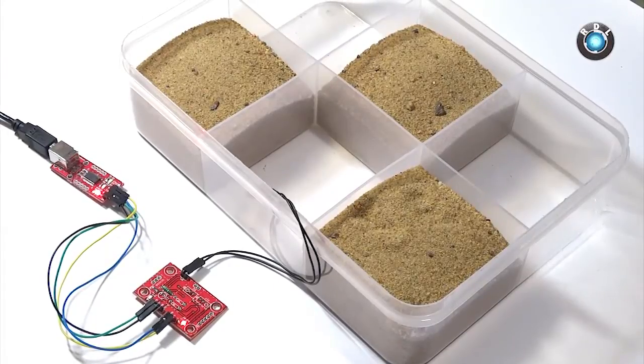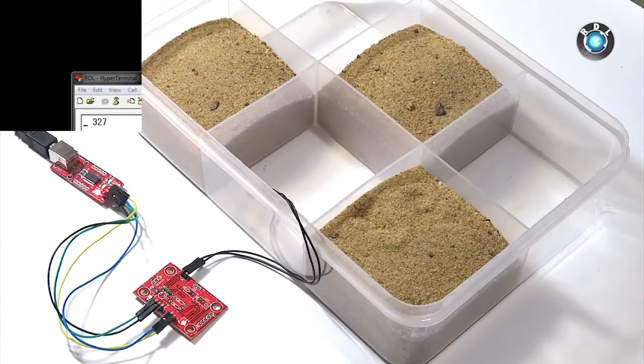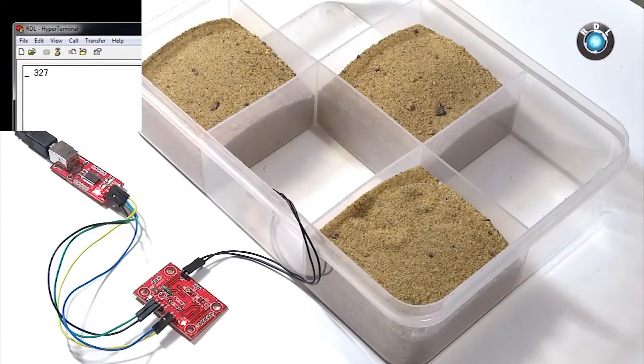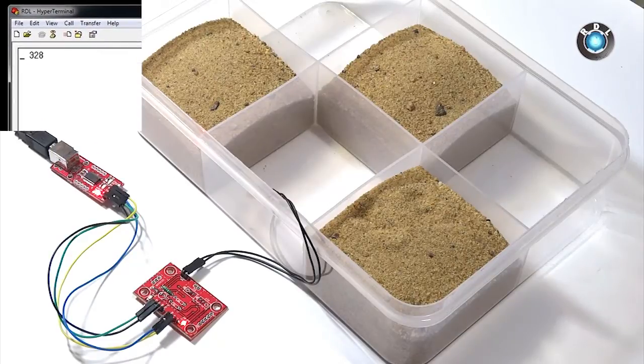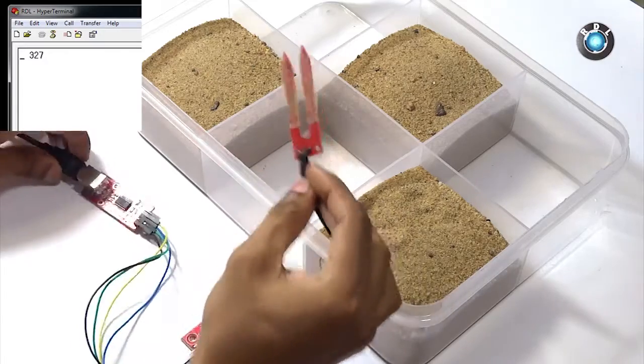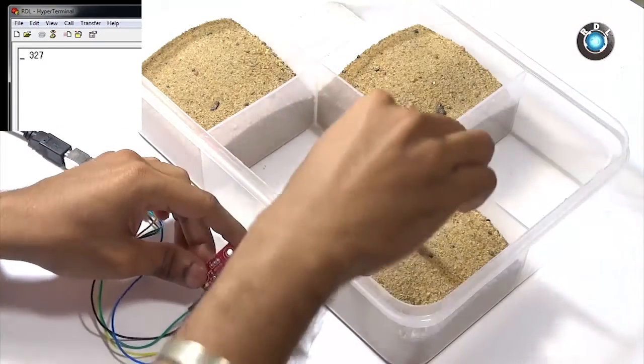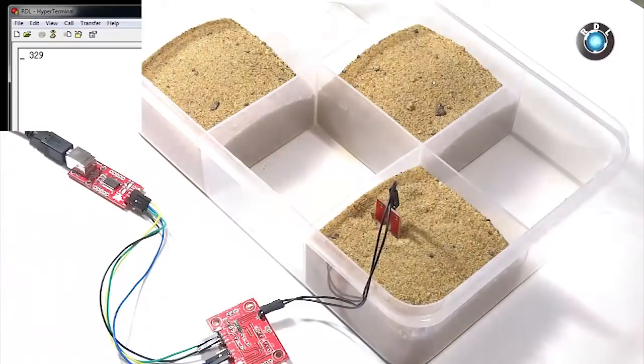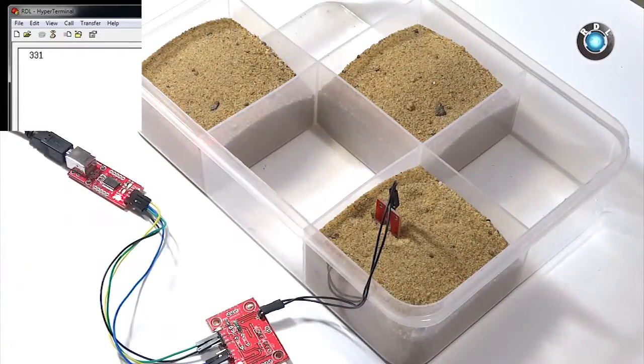Here I have collected some sand. You can use any soil or mud instead of sand. Let me show you the serial window as well. Now I shall place these electrodes in the dry sand here. Notice that there is hardly any change in the reading since the sand is totally dry.